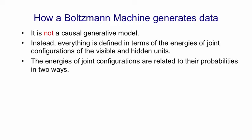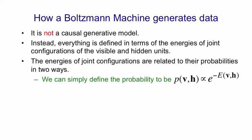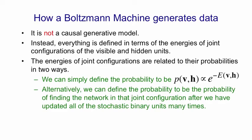There's two ways of relating the energy of a joint configuration to its probability. You can simply define the probability to be the probability of a joint configuration of the visible and hidden variables is proportional to e to the negative energy of that joint configuration. Or you can define it procedurally by saying we're going to define the probability as the probability of finding the network in that state after we've updated all the stochastic binary units for enough time so that we reach thermal equilibrium. The good news is that those two definitions agree.